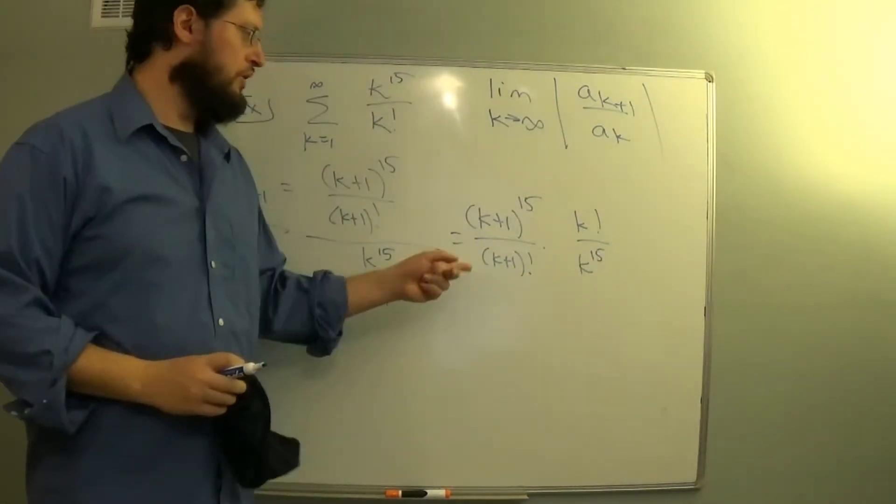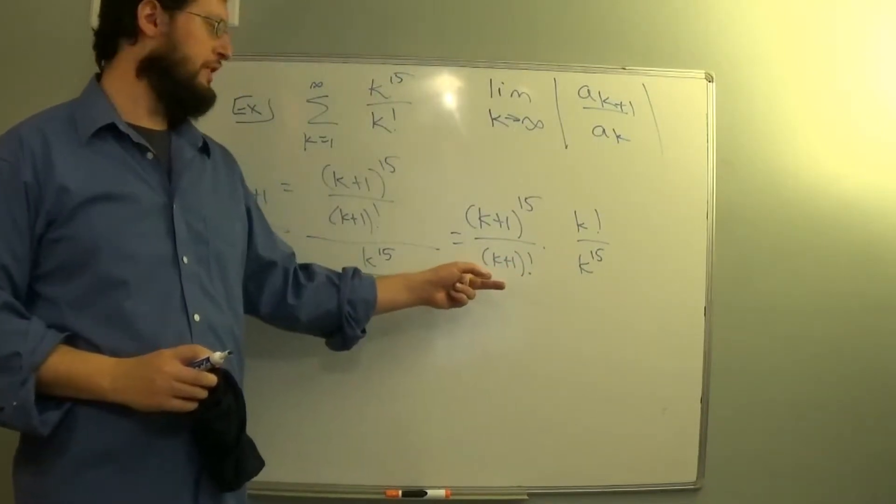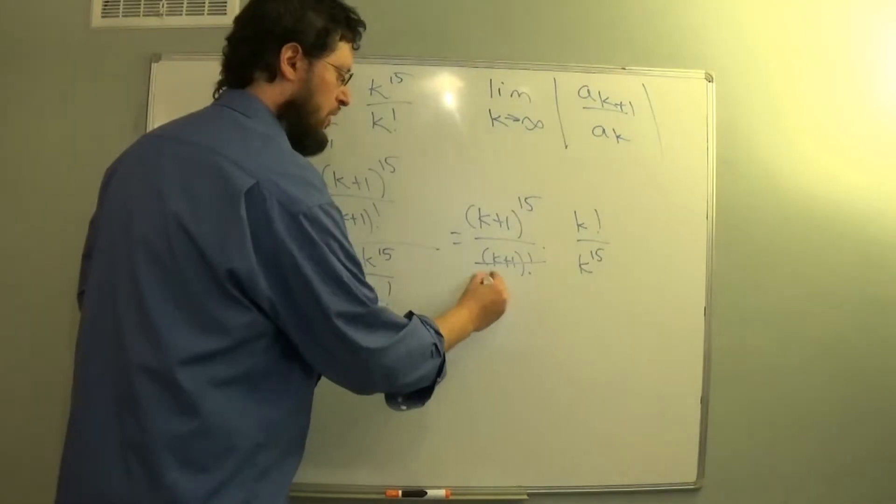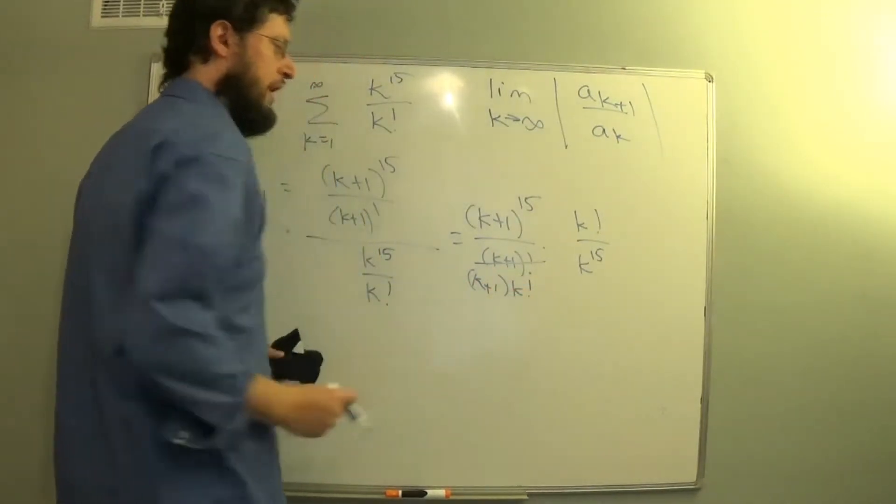How do factorials simplify? Remember you can't just distribute a factorial, that doesn't work. But we can instead rewrite this one as k plus 1 times k factorial.